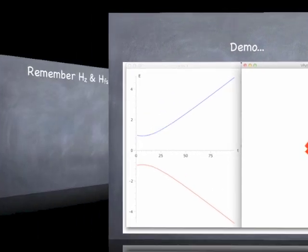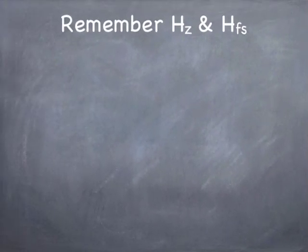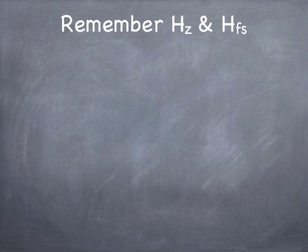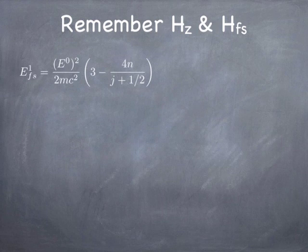Let's get back to the Zeeman effect. We talked about the weak field Zeeman effect last time; today I want to deal with the weak field, the strong field, and everything in between. Let's start with the fine structure correction. The fine structure correction to the hydrogen atom only depends on J, so it makes sense that the fine structure Hamiltonian would be most simply expressed in a basis where J is well-defined — the J, M_J basis.